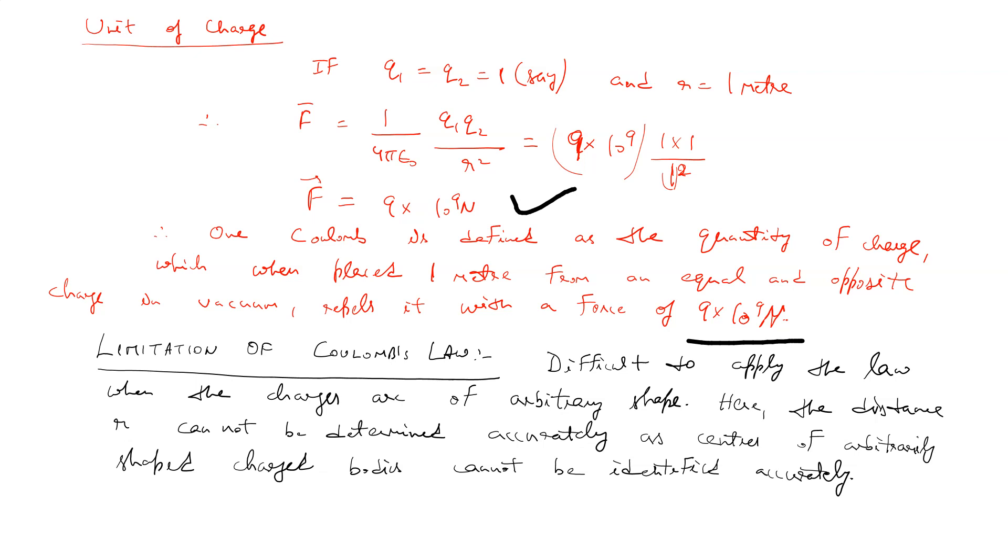There is a limitation of Coulomb's law. Coulomb's law is difficult to apply when the charges are of arbitrary shape. Here the distance r cannot be determined accurately, as centers of arbitrarily shaped charged bodies cannot be identified accurately. So Coulomb's law is difficult to apply on arbitrary shape charges. This is the main limitation of Coulomb's law.